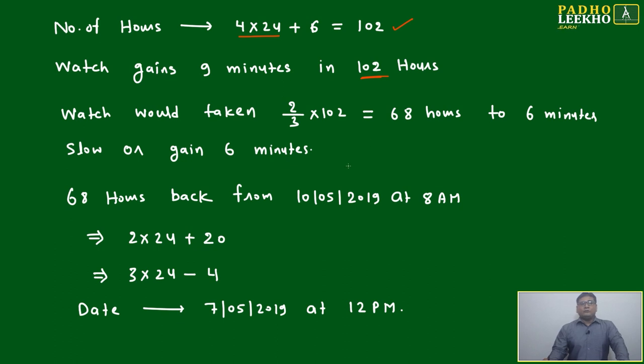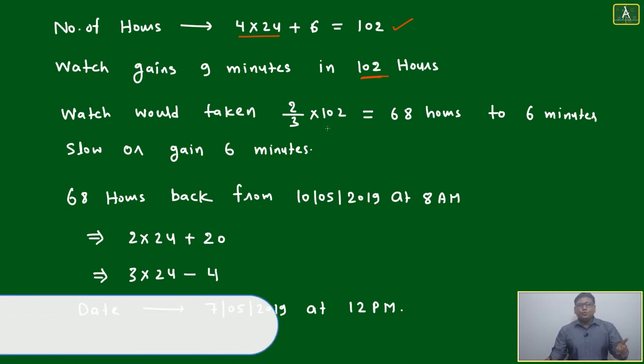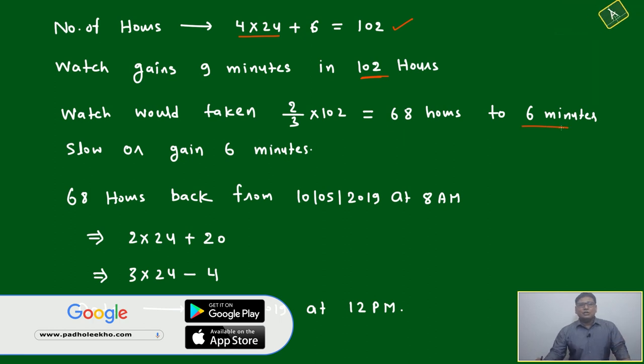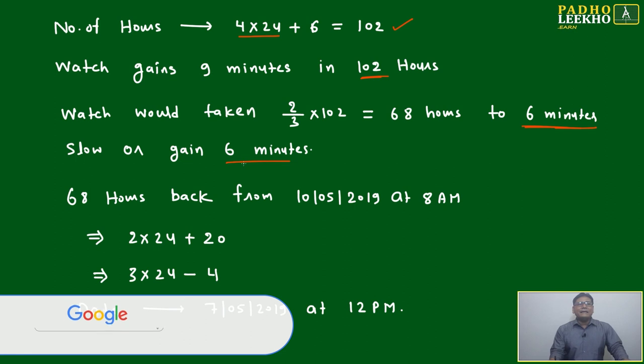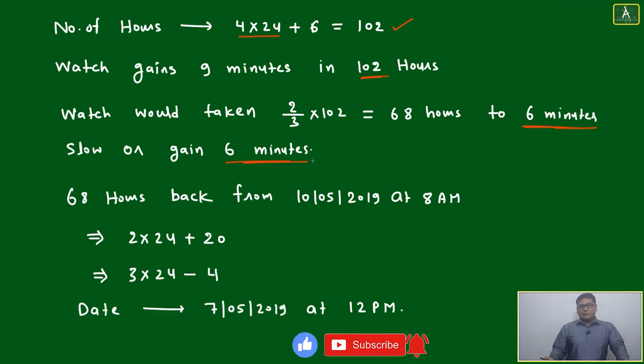Watch would take 2/3 of 102 or 68 hours to become 6 minutes slow or gain 6 minutes. If 9 minutes in 102 hours, we'll make uniform distribution - 2/3 into 102 will be 68, and 2/3 of 9 minutes will come 6 minutes. Question is asking about 6 minutes only, then 6 minute gain will happen in 68 hours.